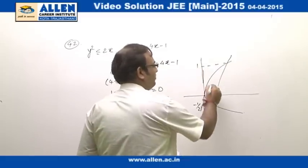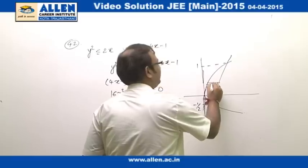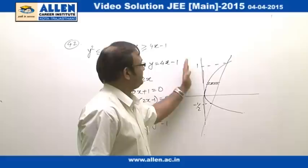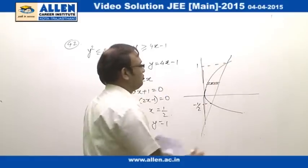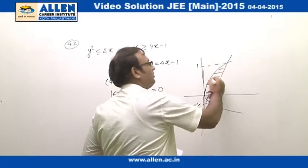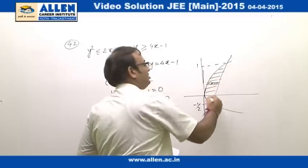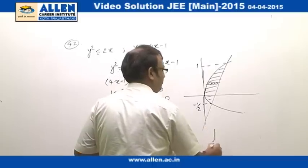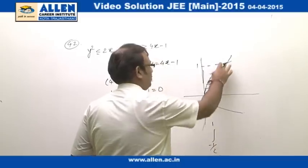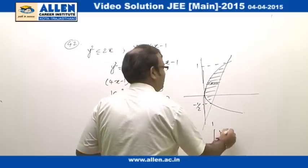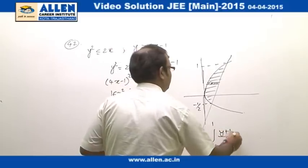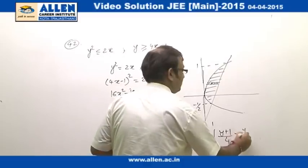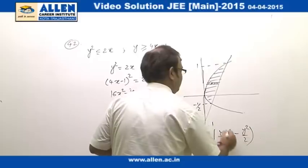Now y²=2x is a well-known parabola and y²≤2x represents the region inside the parabola. The line y=4x−1 has slope 4 and y-intercept −1. The common region of both inequalities is identified and we take a horizontal strip to evaluate the area, integrating from y=−1/2 to y=1, with x going from (y+1)/4 to y²/2.